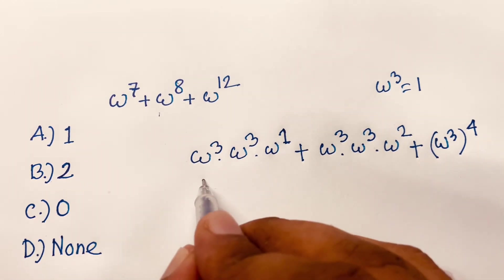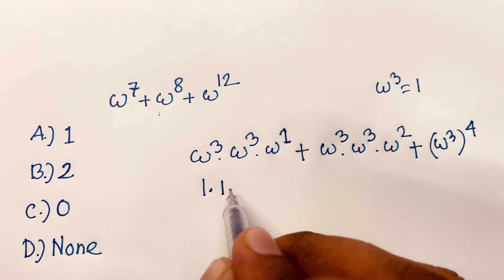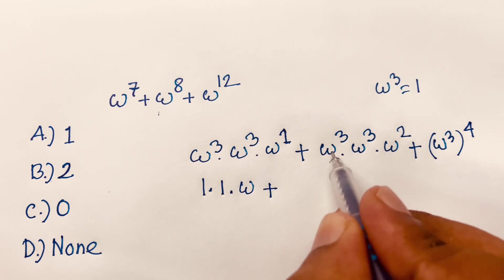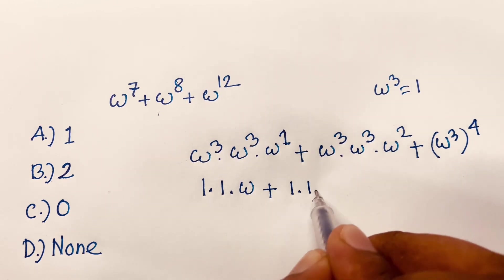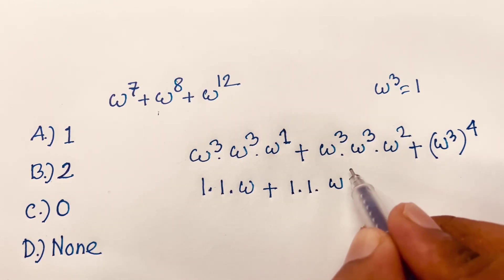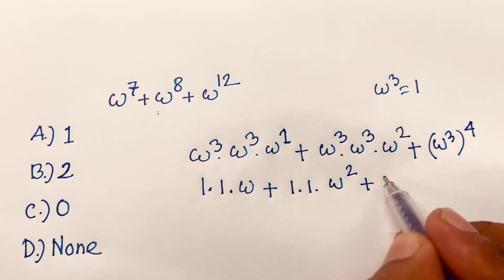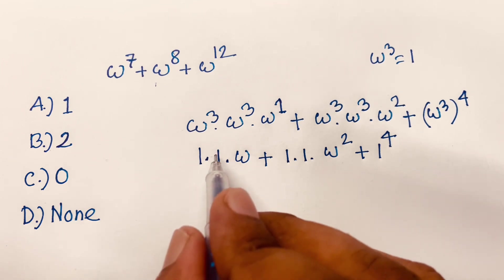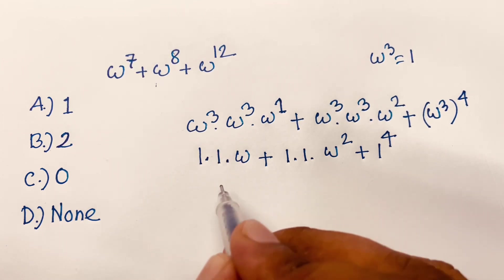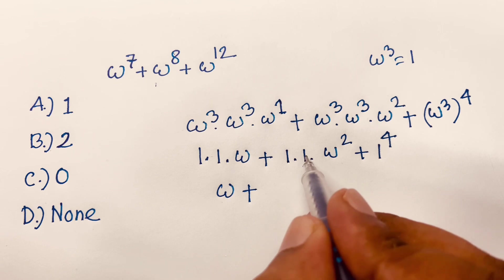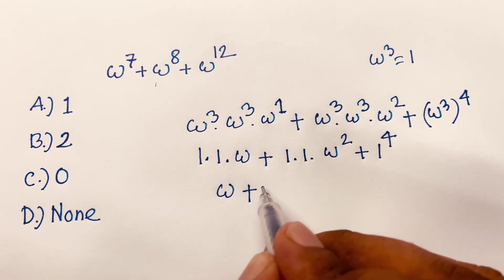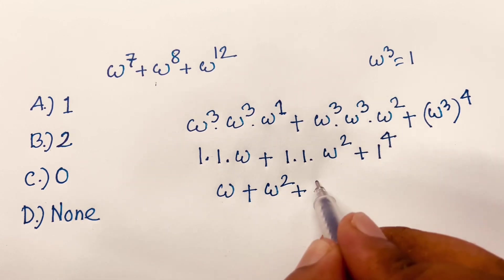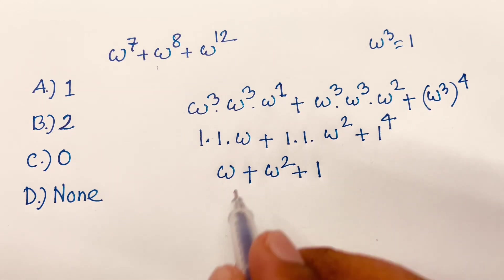So omega power 7 becomes 1 times 1 times omega, which equals omega. Omega power 8 becomes 1 times 1 times omega squared, which equals omega squared. And omega power 12 becomes 1 raised to the power 4, which equals 1.